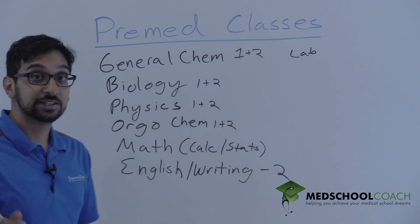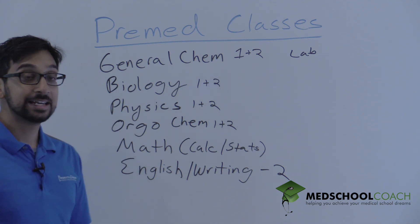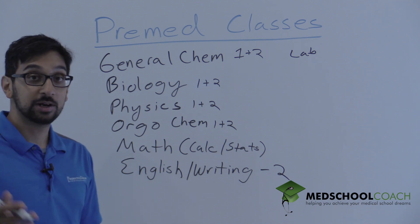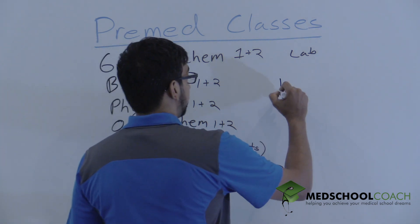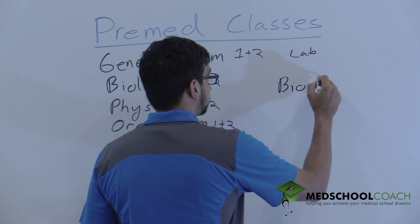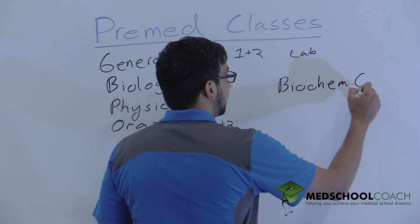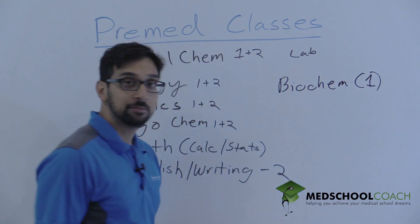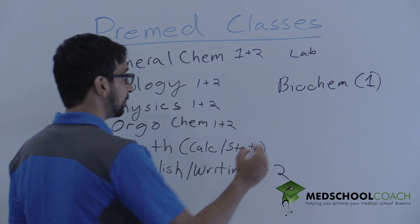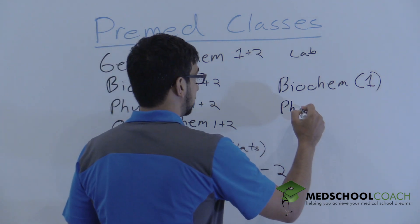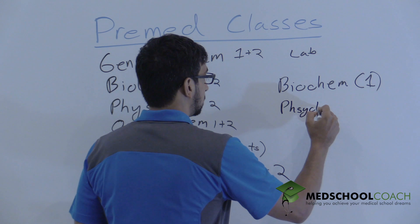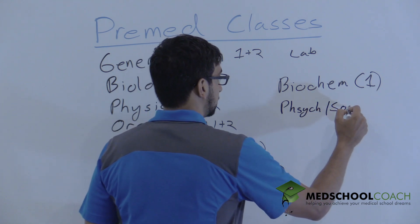Now there's a couple of courses that medical schools are wanting to see or that you're going to want to take because you have to take the MCAT. That's biochem, and typically just one semester of biochem is enough or the first sequence of it. That's psych and that's sociology.